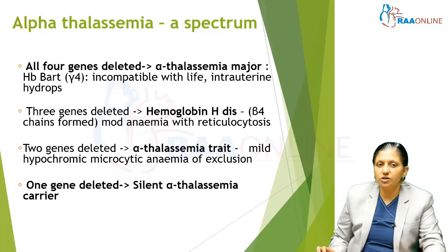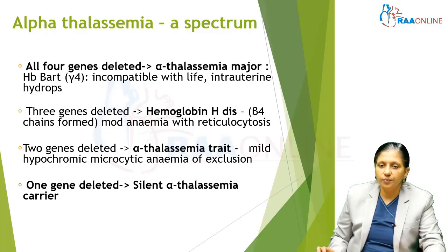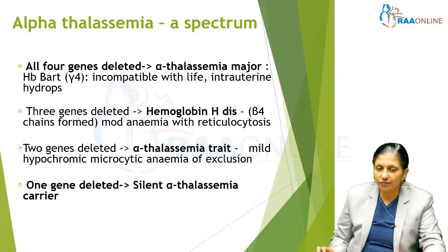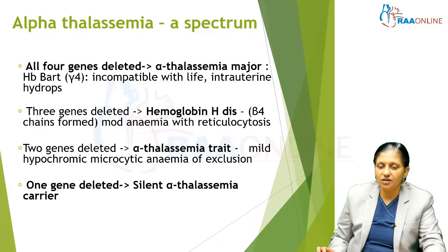If three genes are deleted, it is called Hemoglobin H disease. In Hemoglobin H disease, since there is no alpha chain, the beta chains form tetramers, and the patient has moderate anemia with reticulocytosis.